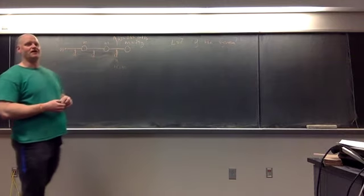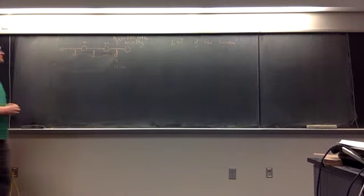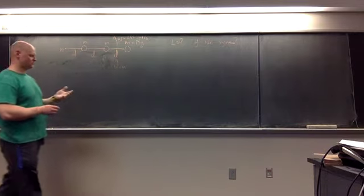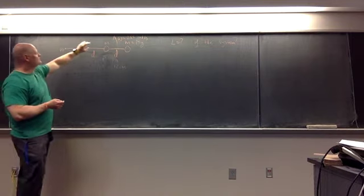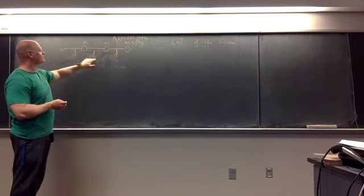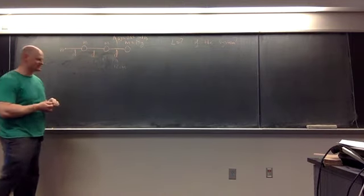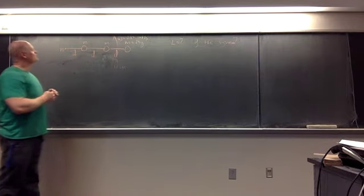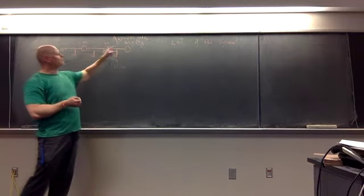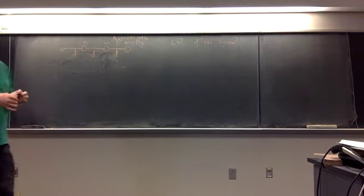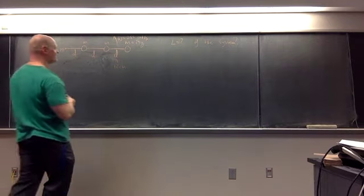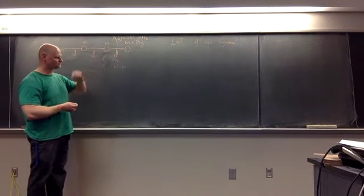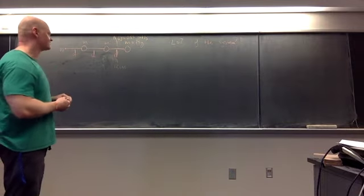Let's look at a couple of examples of angular momentum. The first one goes back to a picture we looked at with the work-kinetic energy theorem. We know these rod pieces, which are all equal length D — where D is 12 centimeters — are massless. We have three identical masses, each of mass 23 grams. The whole system rotates with an angular velocity of 0.85 radians per second. What's the angular momentum of the entire system?